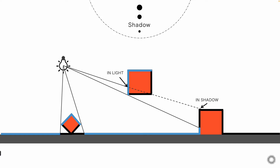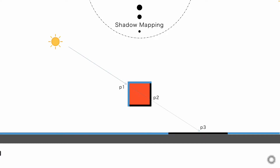First of all, let's introduce the basic idea of shadow mapping. The light starts from the lighting source. Where it can reach will be lit, and where it cannot reach will turn into dark. For example, this light ray will not reach the floor section after the box. So this is the shadow. Let's abstract this procedure.